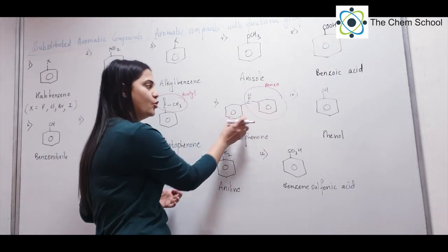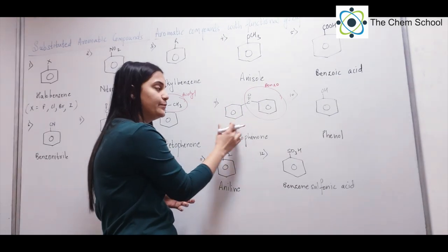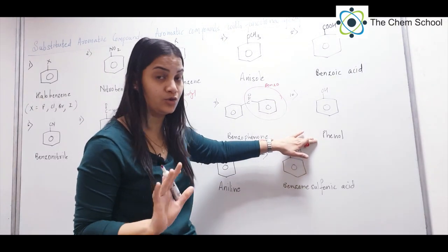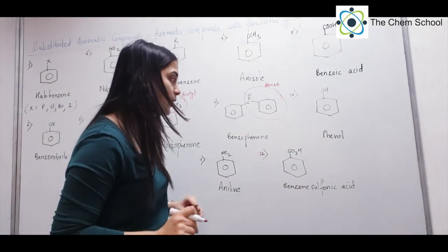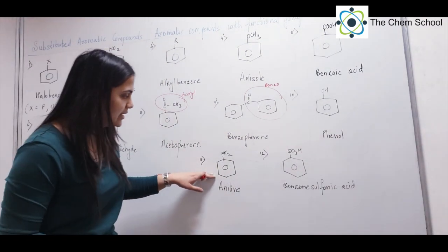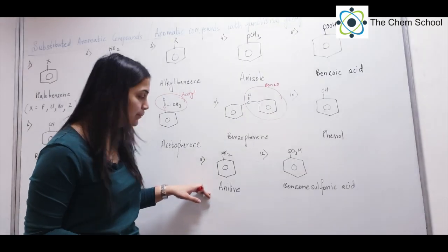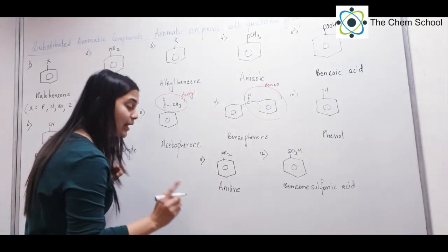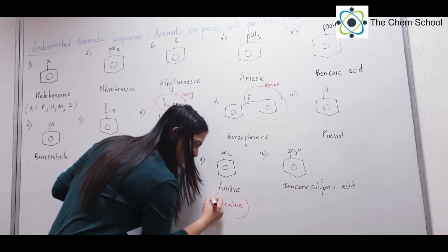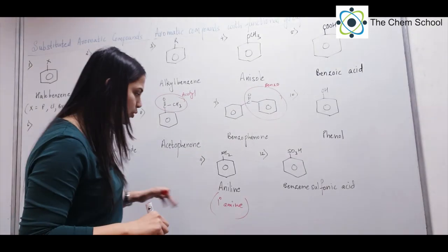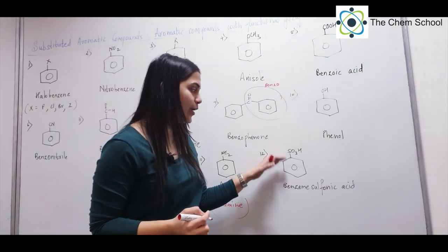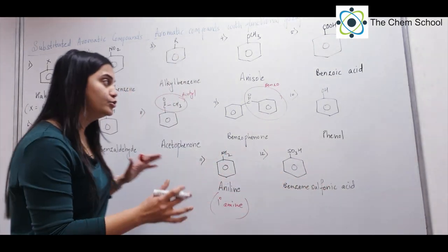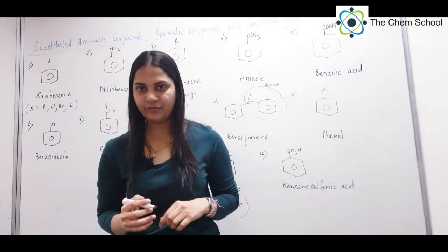If benzene has a C=O (benzoyl) group attached to another benzene (phenyl group, C6H5), it is called benzophenone. Next, benzene with OH is not called an alcohol — it is called phenol. This is very important: benzene with OH is phenol. Benzene with NH2 is called aniline, and since only one substituent is on nitrogen, aniline is a primary amine. Benzene with SO3H is benzene sulfonic acid. These are all very important structures whose names you should practice.